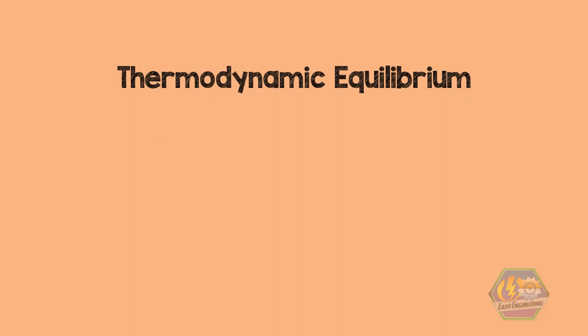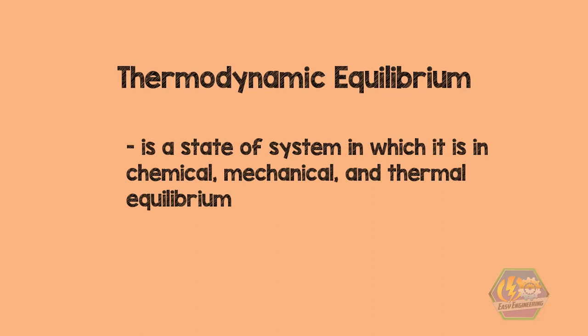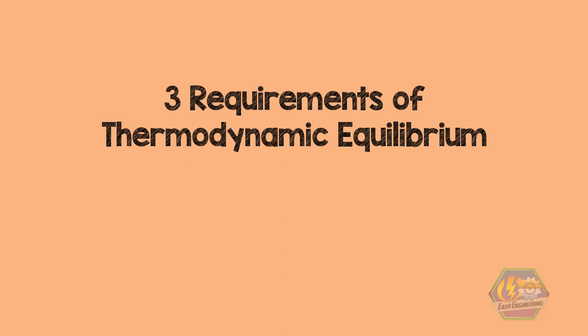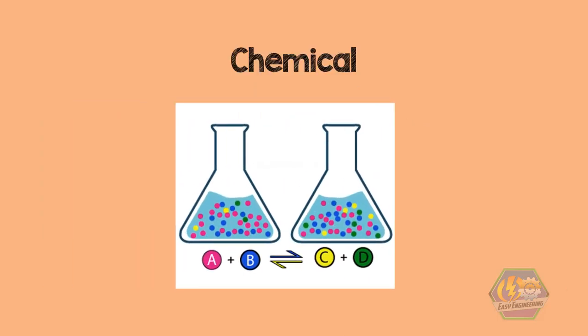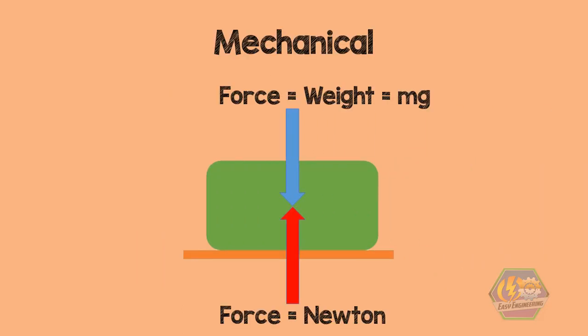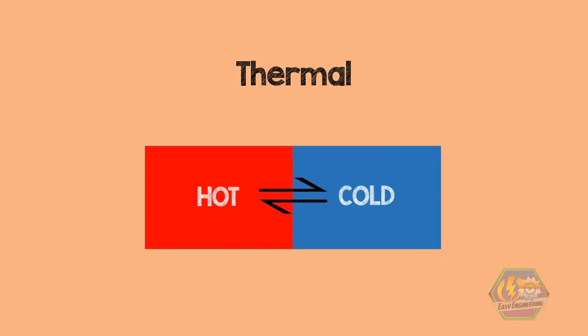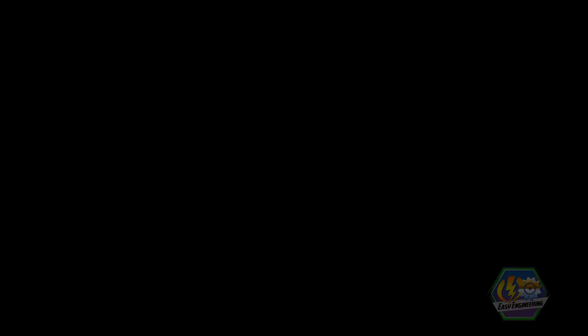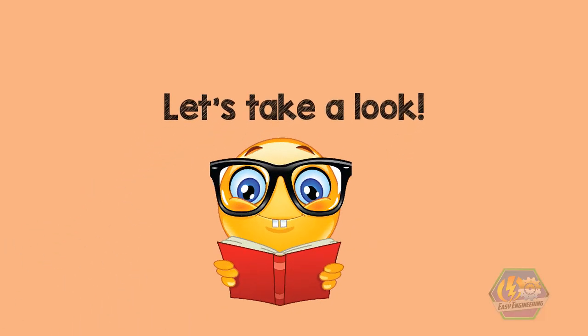Thermodynamic equilibrium is a state of a system in which it is in chemical, mechanical, and thermal equilibrium. So it means that we can only say that the system is in thermodynamic equilibrium if it meets these three requirements: it must be in chemical, mechanical, and thermal equilibrium.